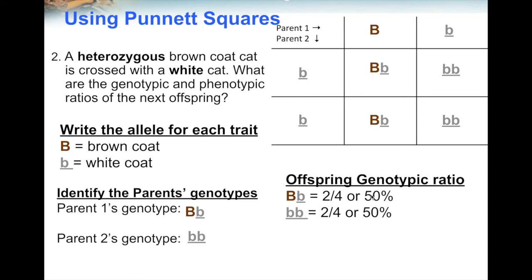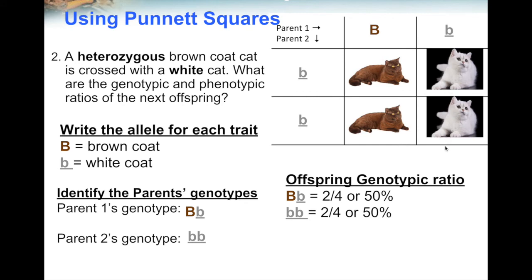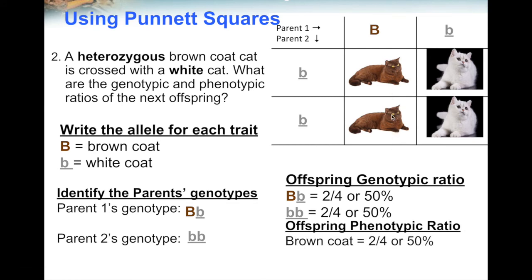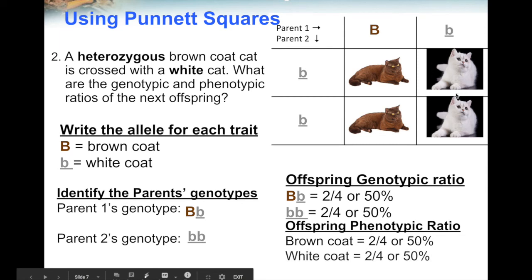Now let's look at the phenotype — will it have brown coat or white coat? The two heterozygous boxes both have one capital B, so they represent the dominant trait of brown coat. The two homozygous recessive boxes only have lowercase or recessive alleles, representing white coat. The phenotypic ratio: brown coat equals two out of four boxes or 50% of the time, and white coat equals two out of four boxes or 50% of the time. That means the kitten has a 50% chance of brown coat or 50% chance of white coat.